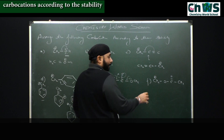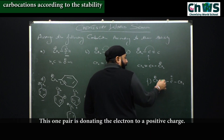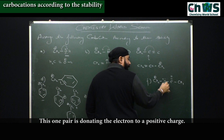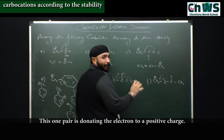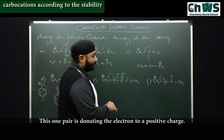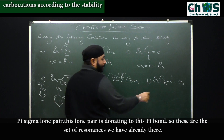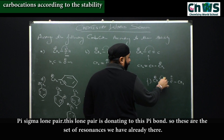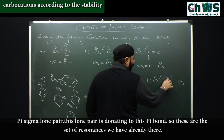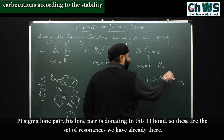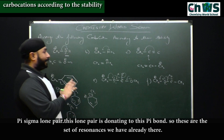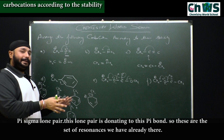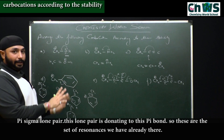This is positive sigma lone pair — this lone pair is donating the electron to this positive charge. Again, pi sigma lone pair — this lone pair is donating the electron to this pi bond. So these are the set of resonances present here.